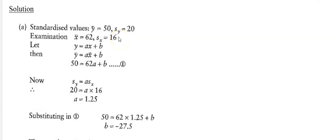The scaling formula is y equals ax plus b. Once we find a and b, we can plug in Anna's marks and convert them to the new scale. Using the mean transformation formula, y-bar equals a times x-bar plus b, we substitute y-bar equals 50 and x-bar equals 62 to get: 50 equals 62a plus b. Call that equation 1.